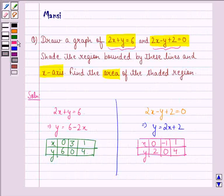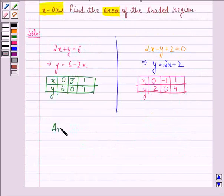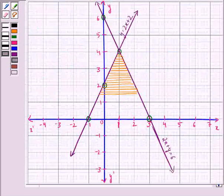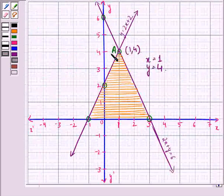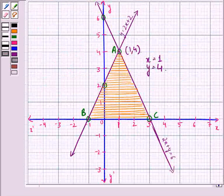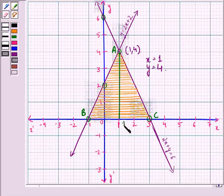Also, we see that area of the shaded region, say triangle ABC, will be - let this be the point A, B, C and let this altitude be AD.